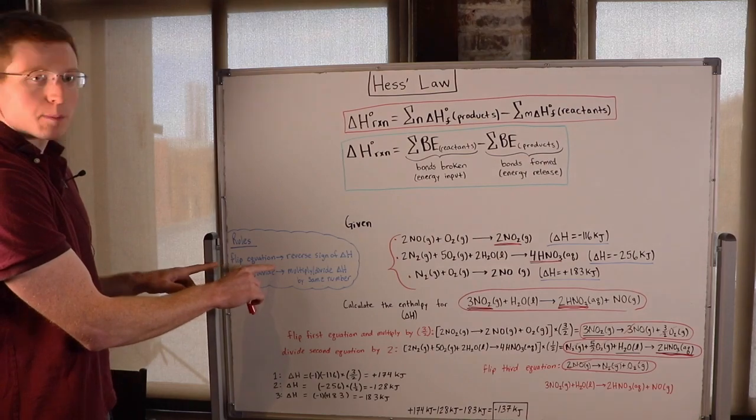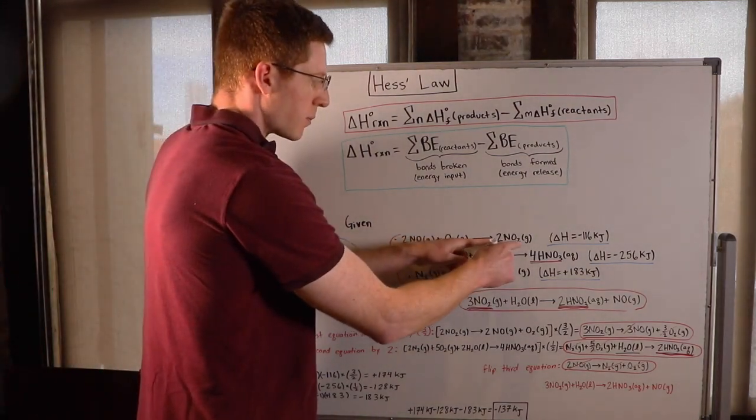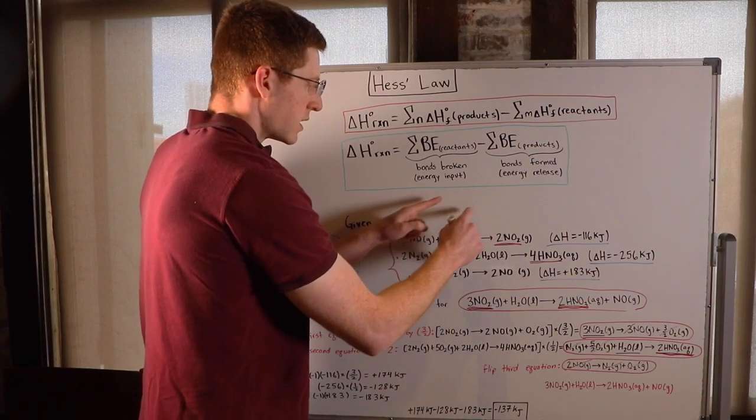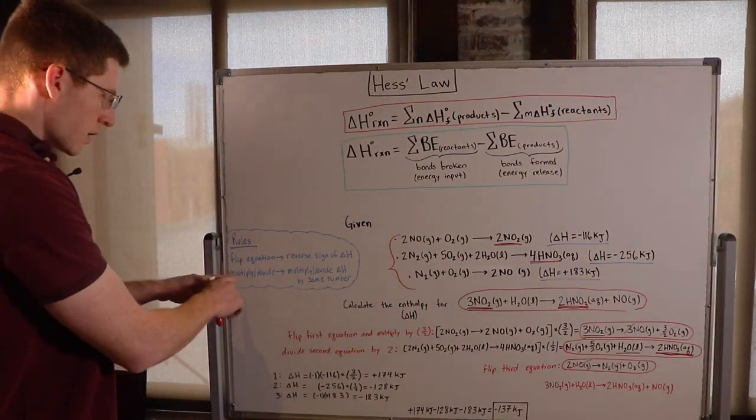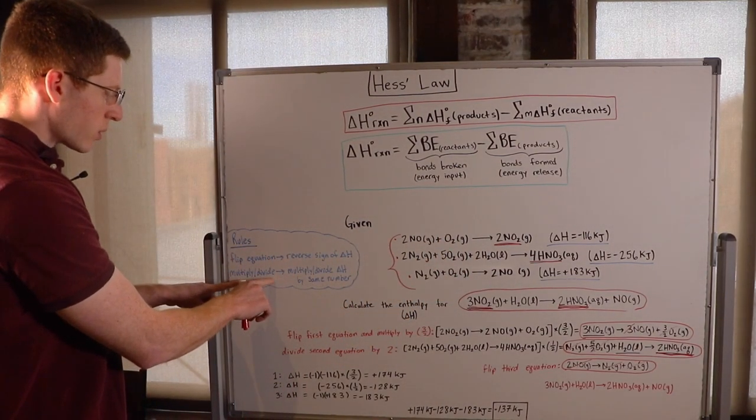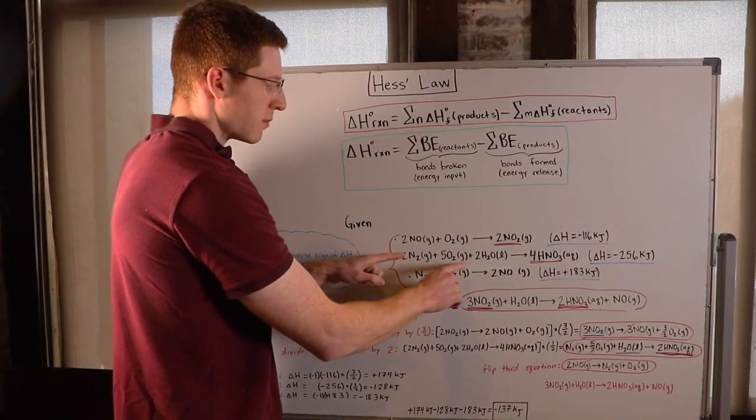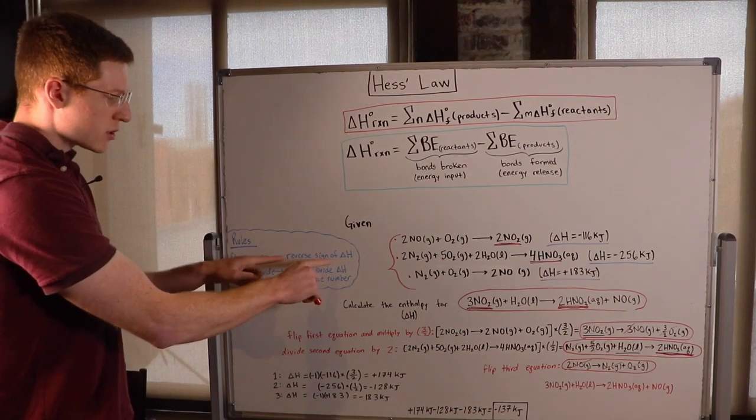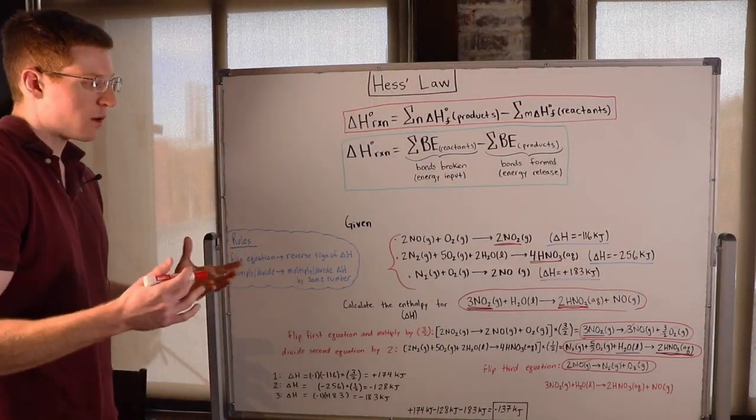Well, number one, I can flip an equation. So in other words, I can take the products of one reaction, make them into the reactants, take the reactants, and make them into the products. I can flip any reaction I need to. Number two, I can multiply or divide by whatever number I need to to change the stoichiometric coefficients to the number I need. And these are going to have resultant effects on the enthalpy of each reaction that I'll have to account for at the end.